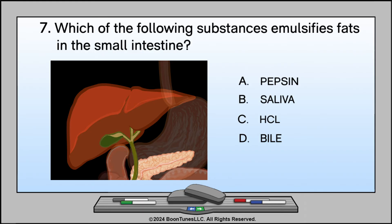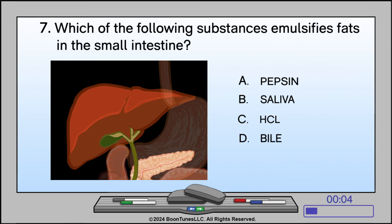Which of the following substances emulsifies fats in the small intestine? A. Pepsin. B. Saliva. C. HCL. D. Bile. The answer is D: Bile.